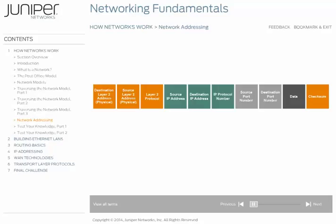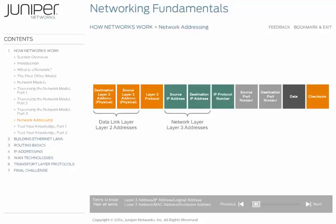To understand how networks work, it's critical to understand the two different types of addressing networks use. Layer 3, or the network layer, adds an address to the data as it flows down the stack. Then, Layer 2, or the data link layer, adds another address to the data.